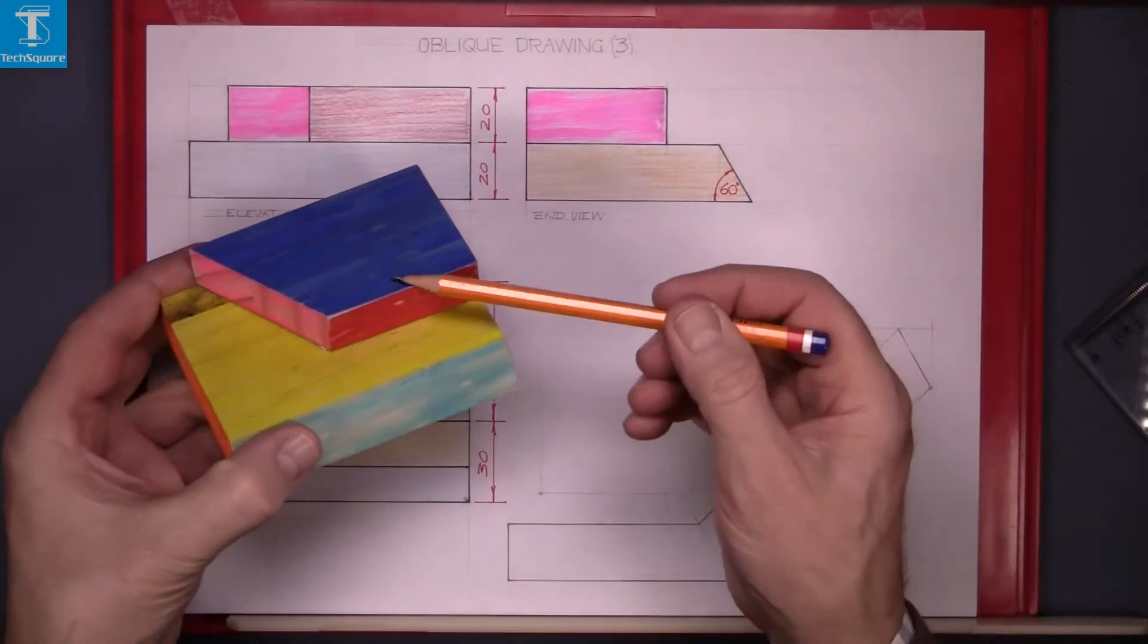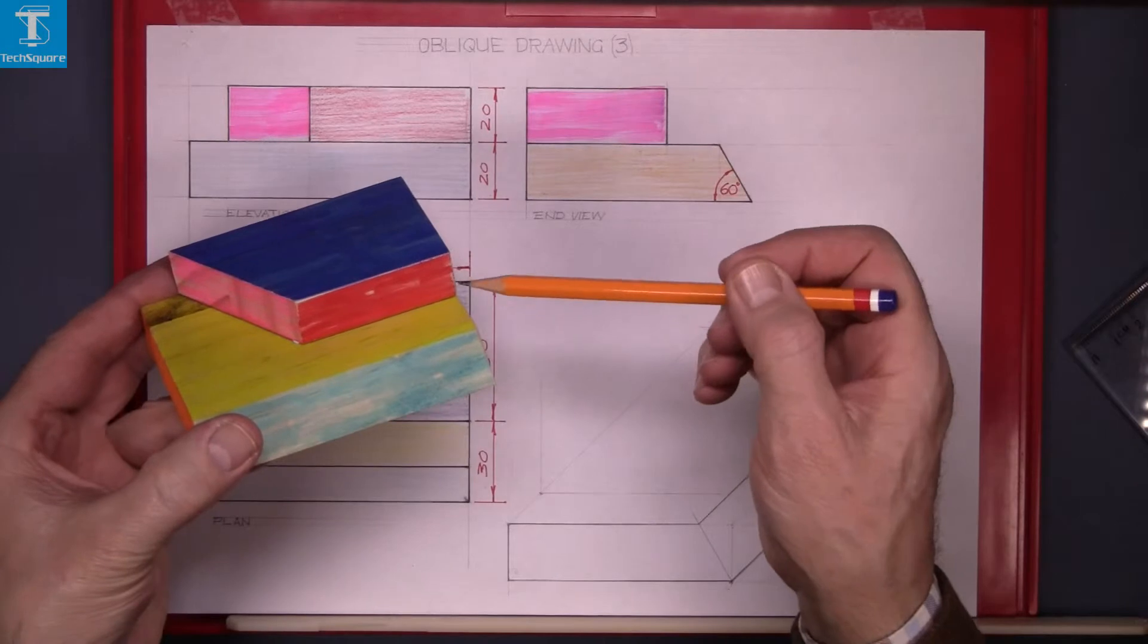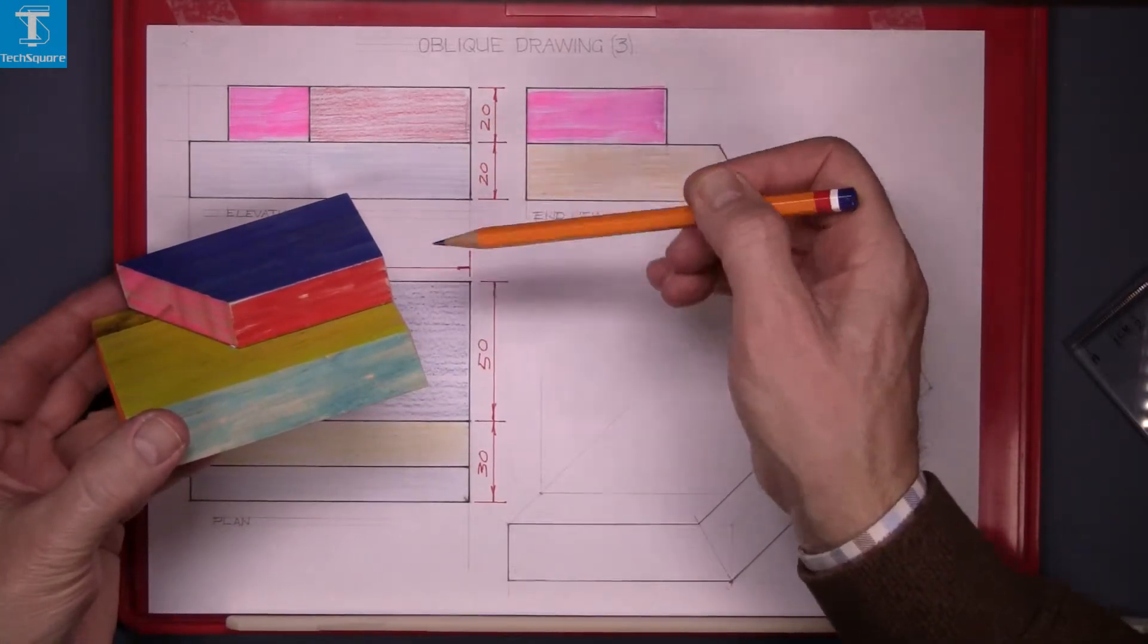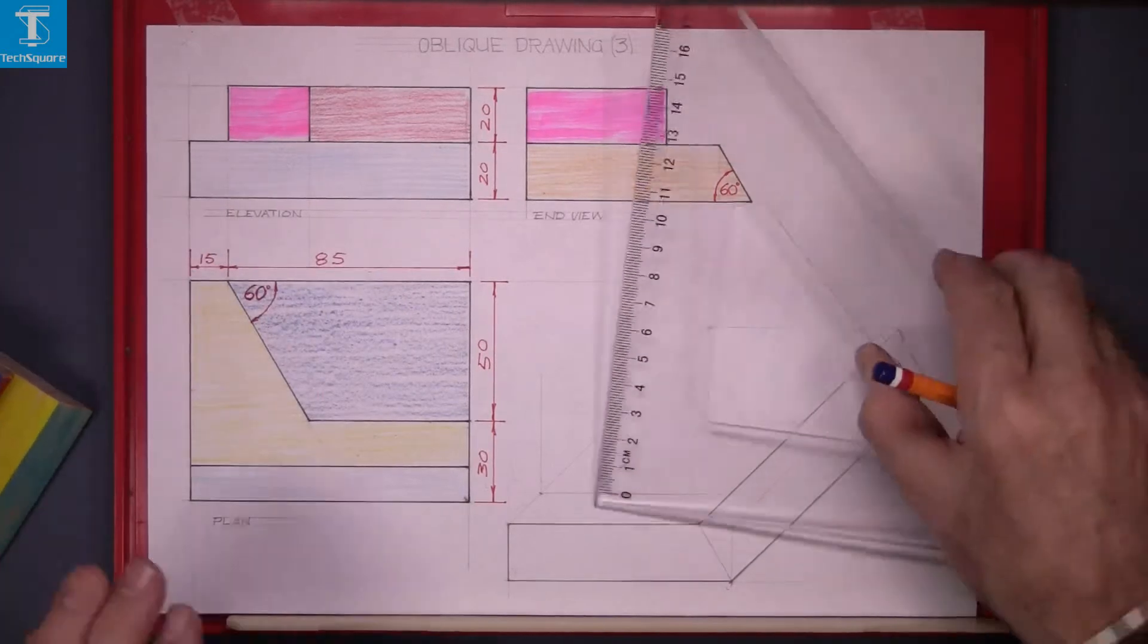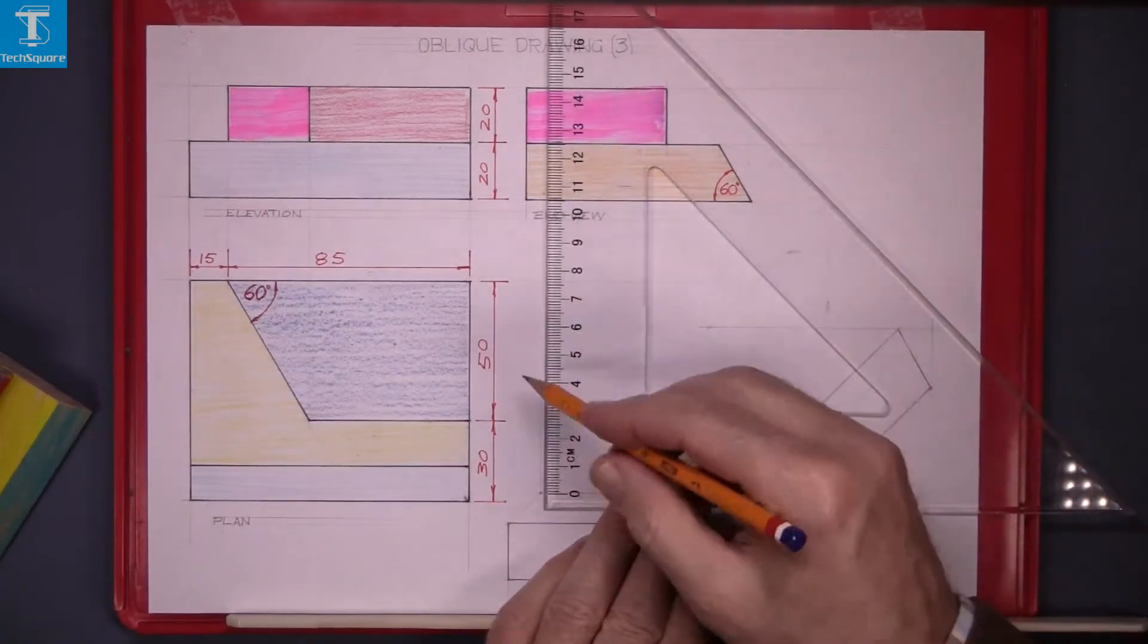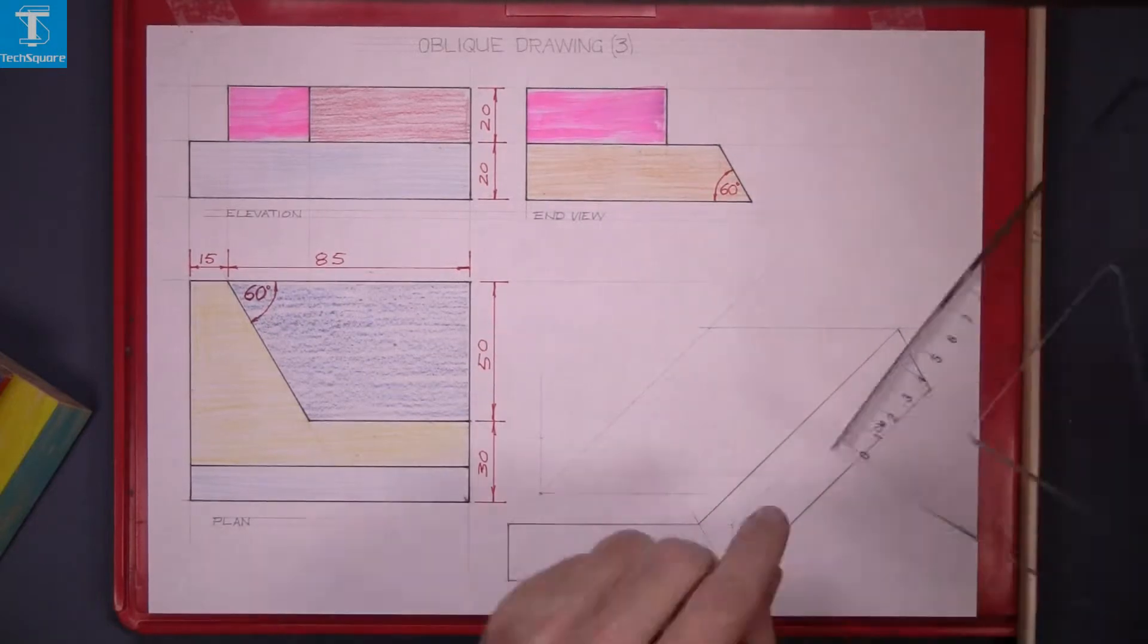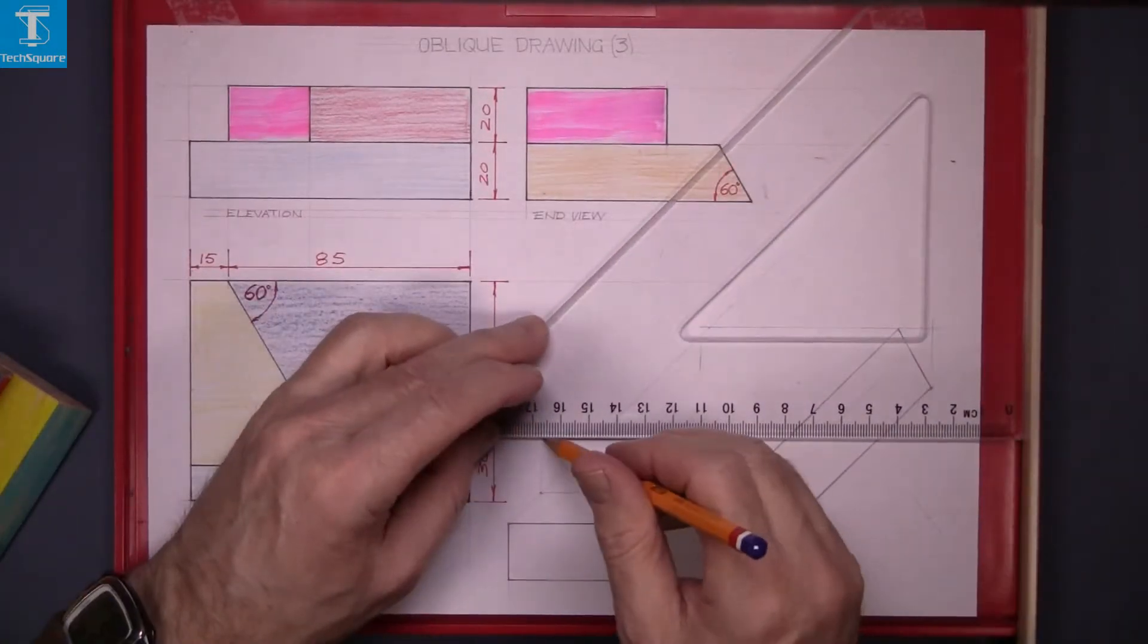The height of that piece is the same as in the elevation which the thickness of that piece there is 20. So take that height mark up to 20 here and draw a line across horizontally.